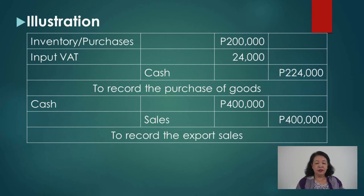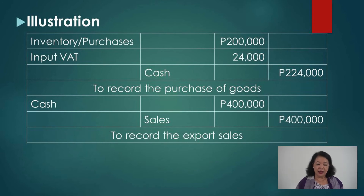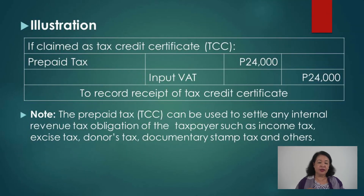Illustration: To record the purchase of goods — debit Inventory/Purchases 200,000, debit Input VAT 24,000, credit Cash 224,000. The zero-rated entity bought goods and paid input VAT of 24,000 included in the purchase price. To record the export sale — the goods purchased for 224,000 were sold for 400,000 via export: debit Cash 400,000, credit Sales 400,000. Notice that no output tax is recognized, because the rate is zero.